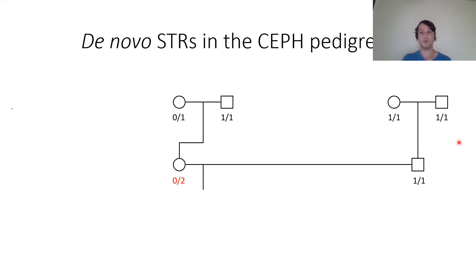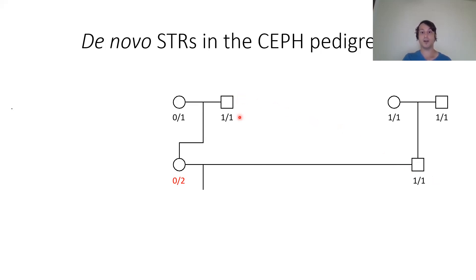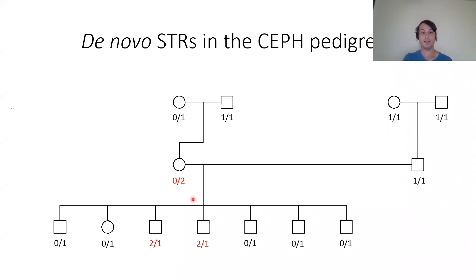Here's an example CEPH pedigree — note that zero means the individual has the reference allele, not that they lack the STR; these are coded as multi-allelic states. The top-right grandparents are both homozygous 1-1 and passed 1-1 to their son. The top-left grandfather is 1-1, grandmother is 0-1, and they passed 0 to their daughter. But a mutation occurred: the daughter has a new allele 2, which is de novo. We confirmed this in the next generation — two of her sons carry the 2 allele.